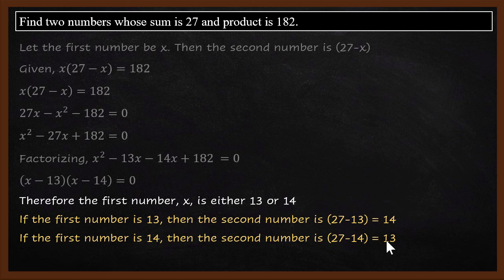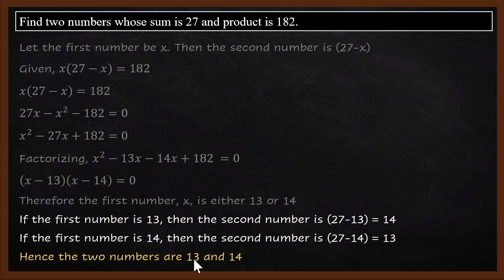First number is 14 and second number is 13. So the two numbers are 13 and 14. To verify, 13 plus 14 is 27, 13 multiplied by 14 is 182. So this is how we can solve this problem.